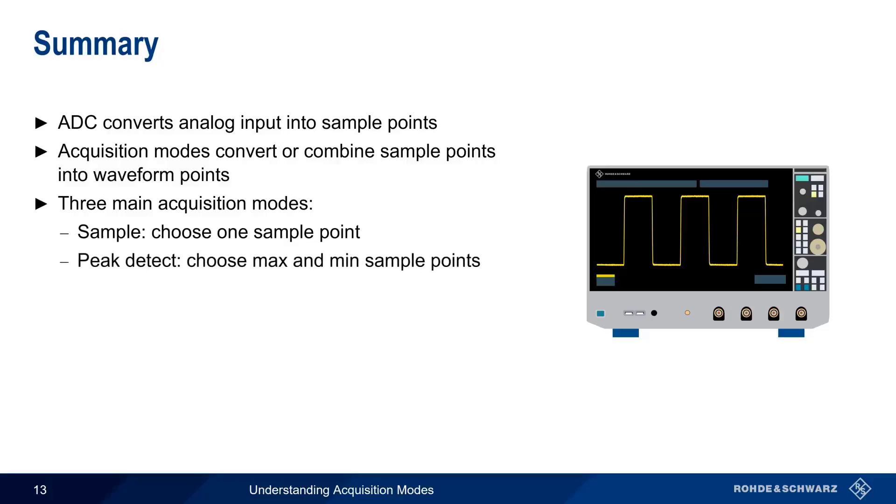Peak detect returns the maximum and minimum sample point and is helpful in looking for outliers or in worst-case analysis. High resolution mode combines or averages the points within an interval, and this results in lower noise and greater vertical resolution.